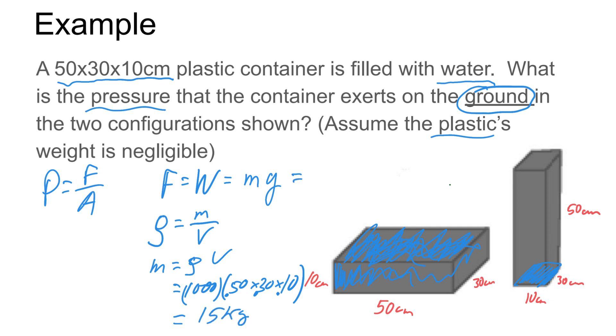So we get the mass of this to be 15 kilograms, which means our weight is going to be 15 times 9.8, gives us 147 newtons.